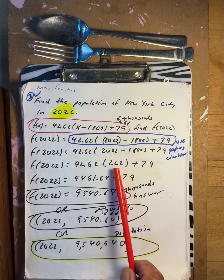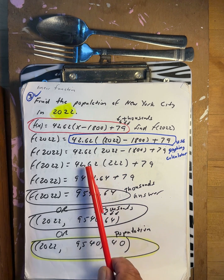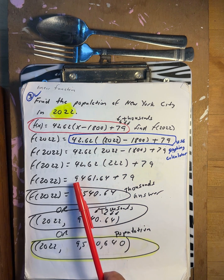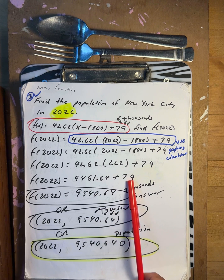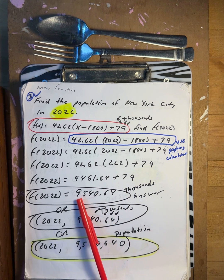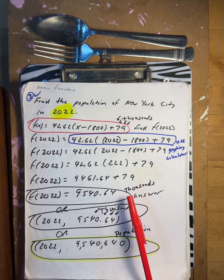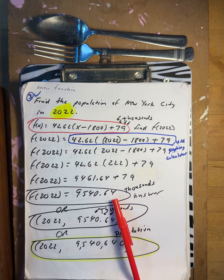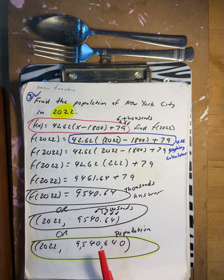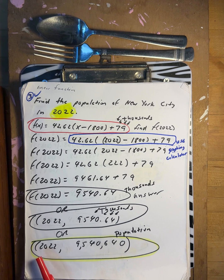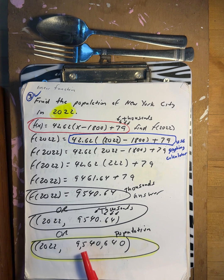222 times the coefficient gives you 9461.64, plus 79 gives you 9540.64 thousands. Converting: in the year 2022, New York City's population was nine million, five hundred forty thousand, six hundred and forty.